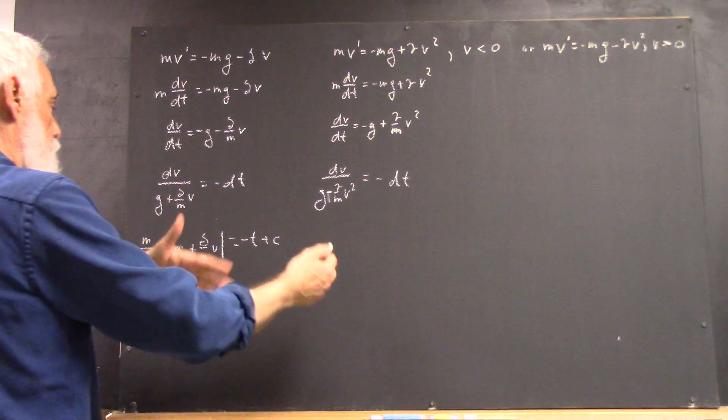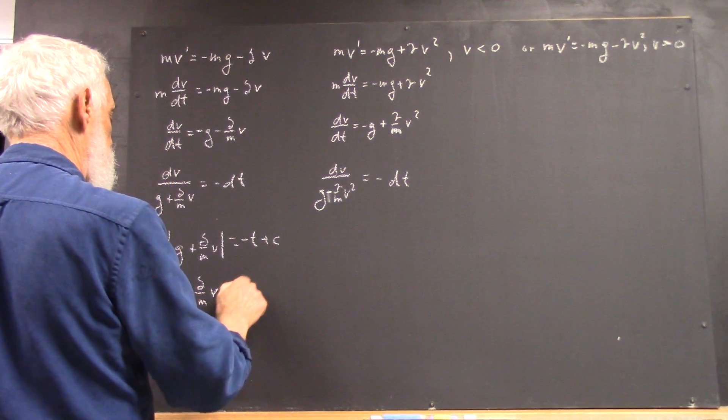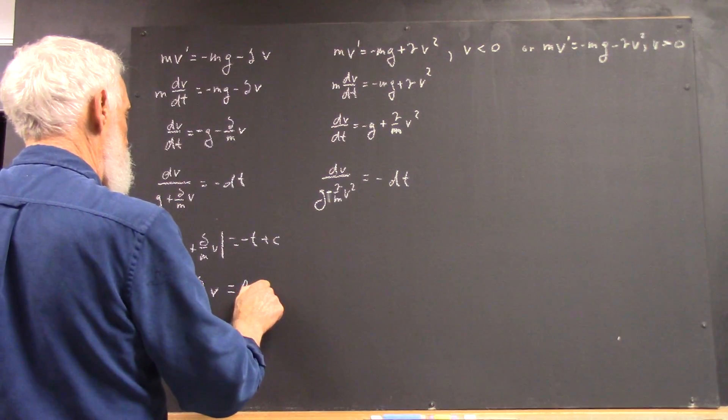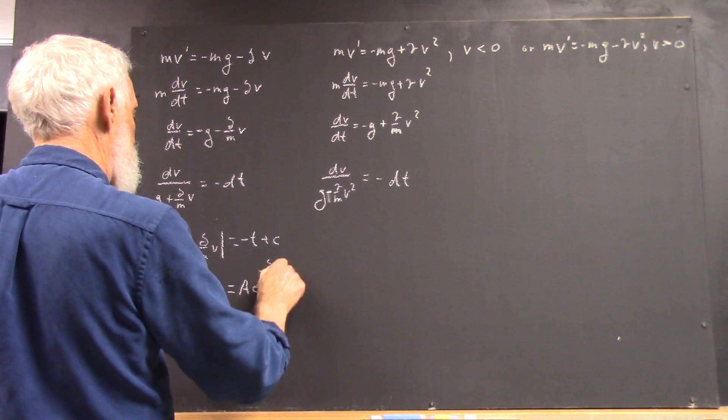And then you're going to exponentiate both sides, and you're going to end up again with an AE to the negative delta over MT.